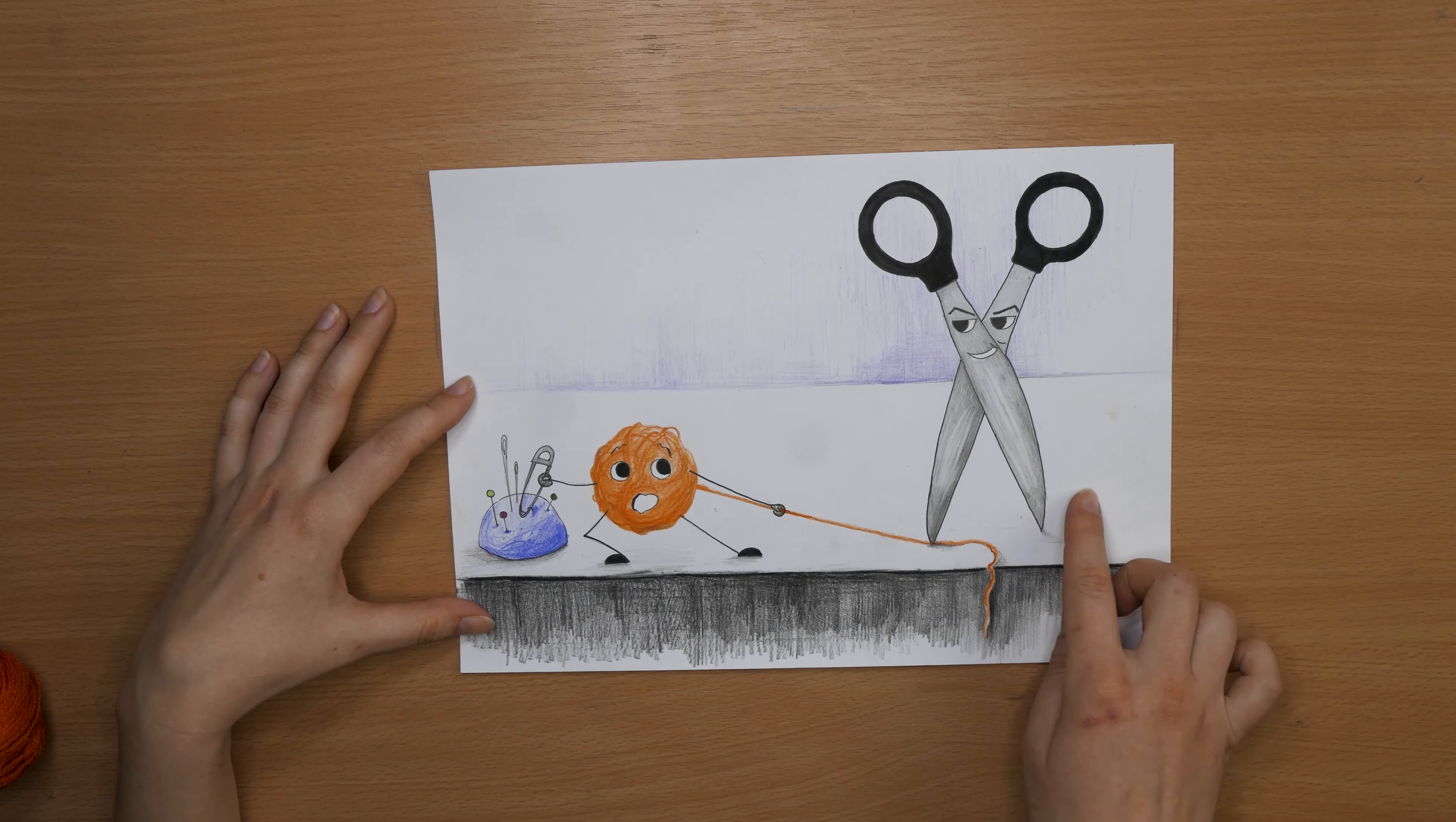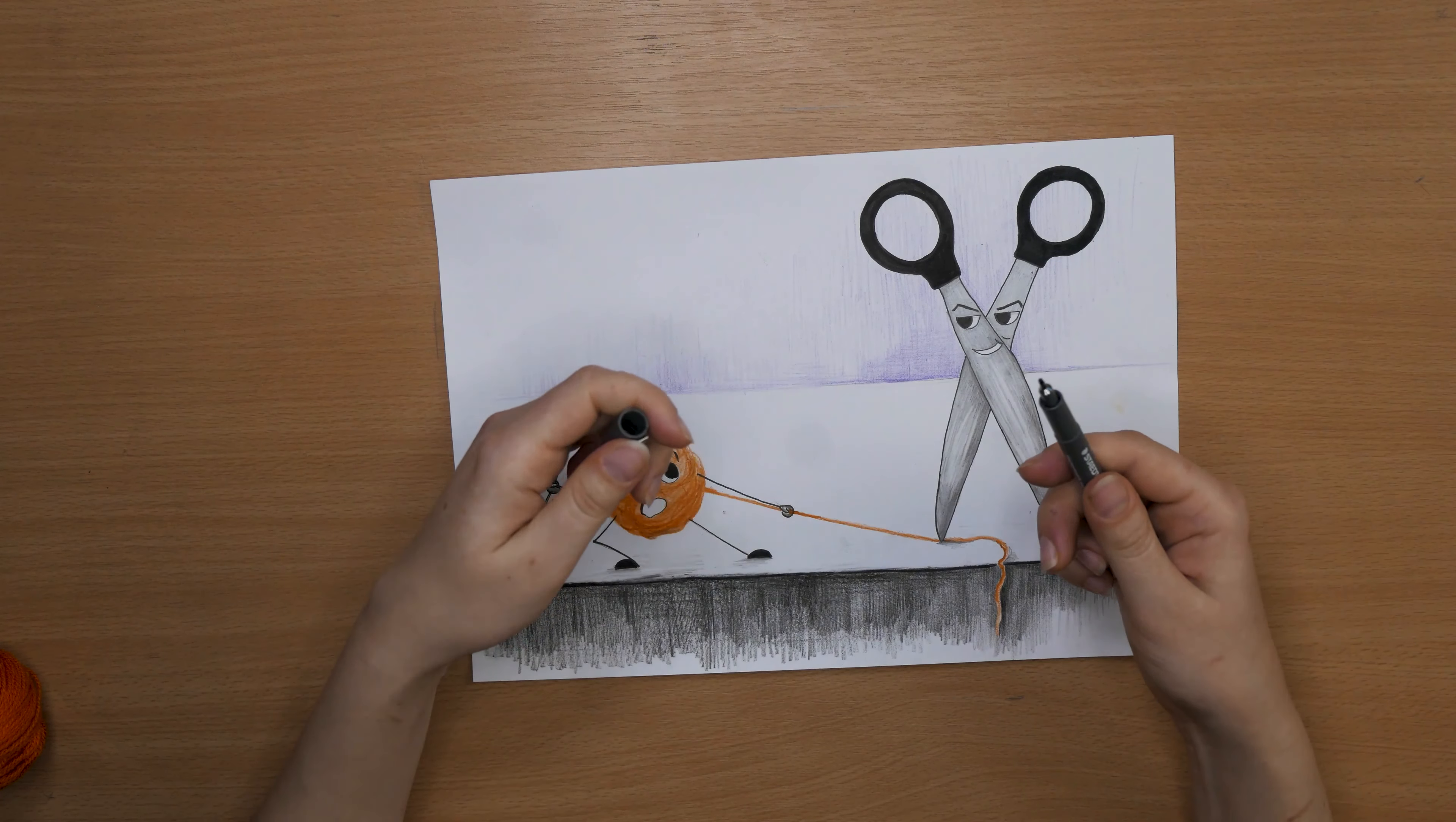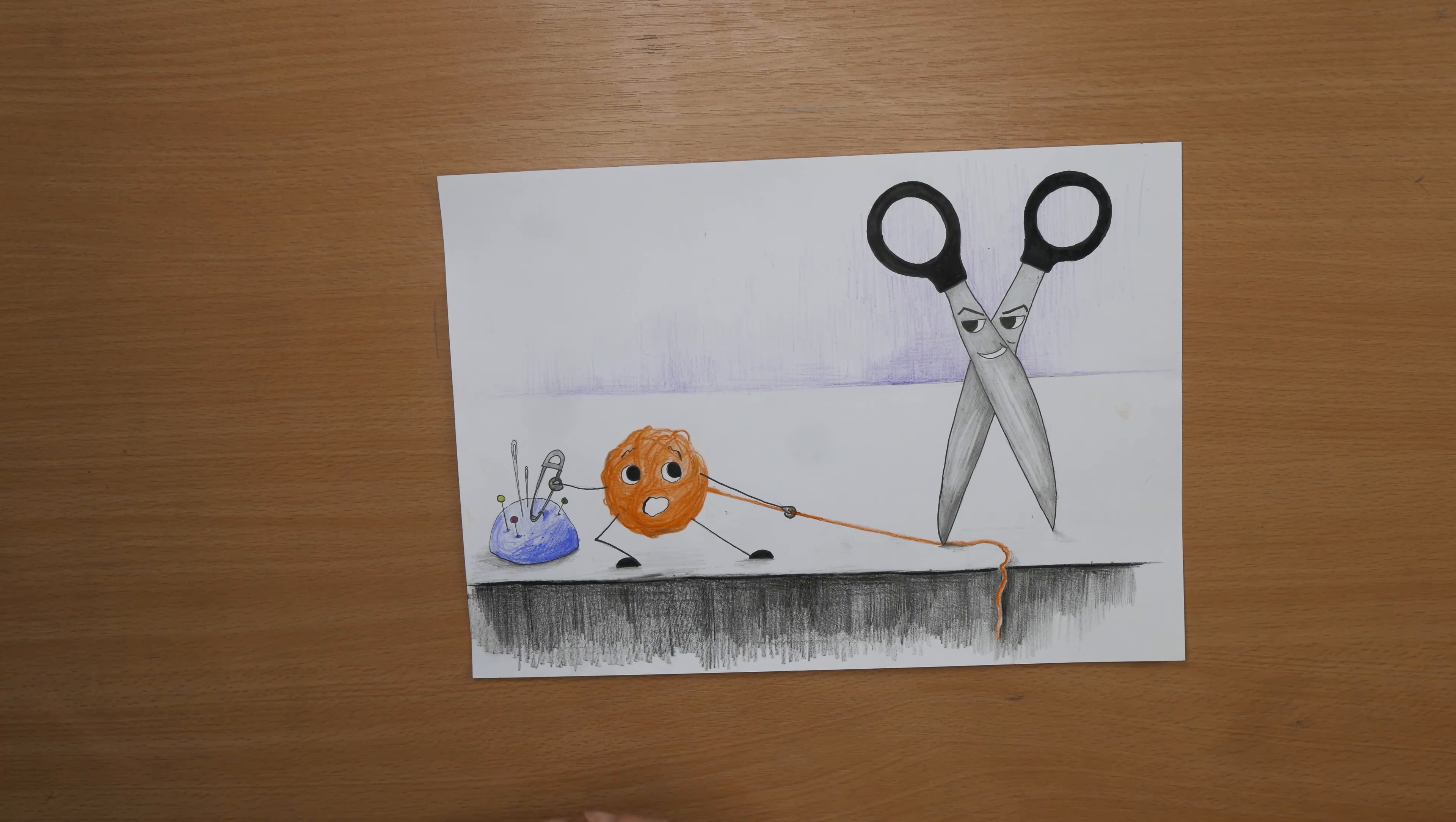First of all I sketched out the characters with the crayon, then I did the contour with liners of different thickness, and then started coloring first with crayons and then with the colored liners and markers.